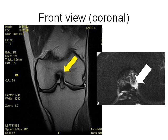The front or coronal view is also helpful for visualizing the ACL. The yellow arrow shows the normal ACL attachment on the lateral wall of the femur or thigh bone notch at the 2 o'clock position. On the right, the white arrow shows bright white fluid because the ACL is torn off the lateral wall of the intercondylar notch.